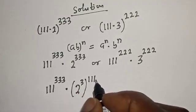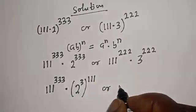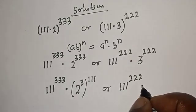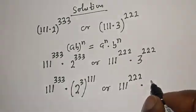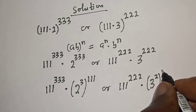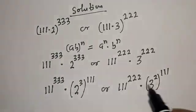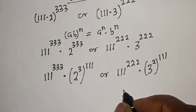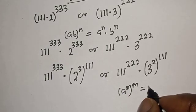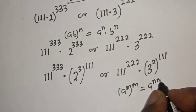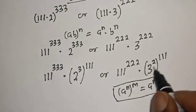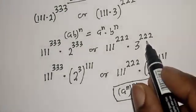We can rewrite 2 raised to the power 333 as 2 raised to the power (3 × 111), and similarly 3 raised to the power 222 as 3 raised to the power (2 × 111). Remember the rule: a raised to power n, then to power m, equals a raised to power (n × m). Applying this gives us the simplified forms.